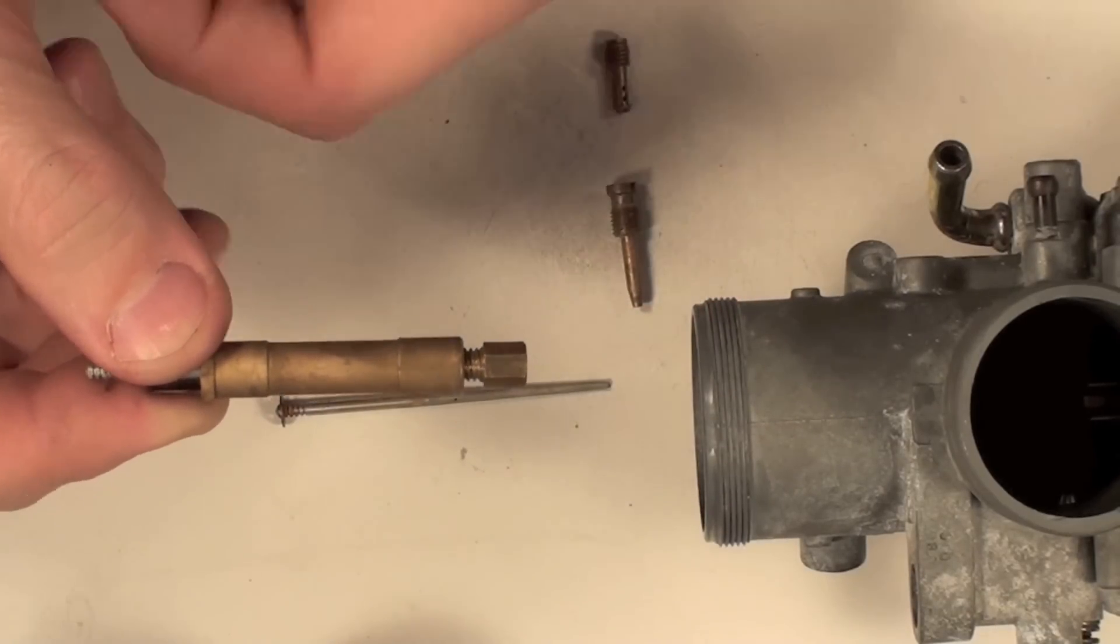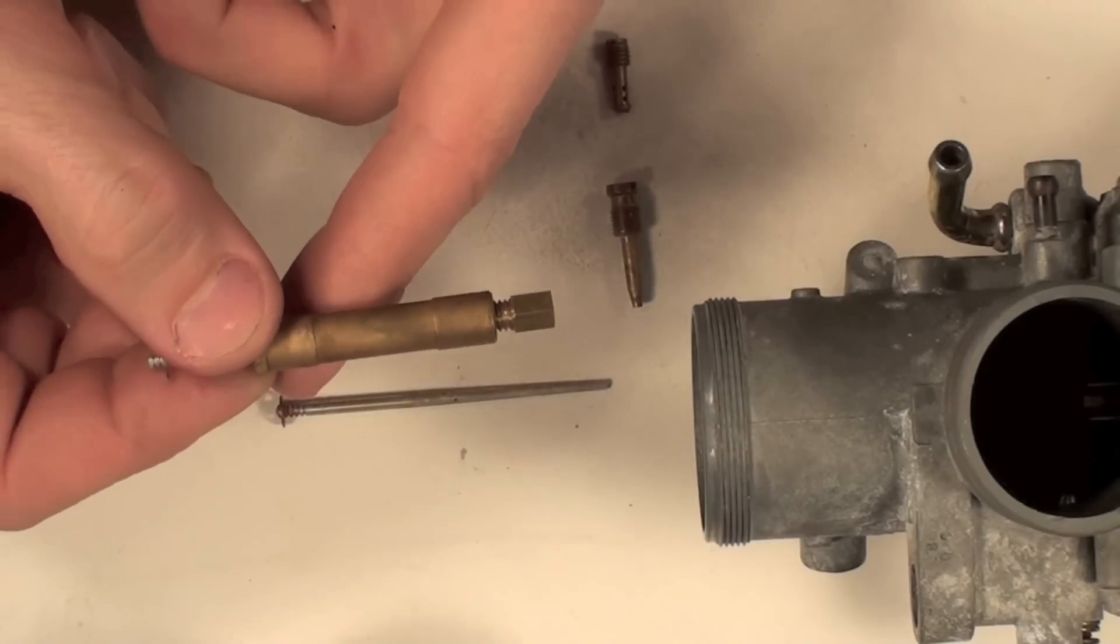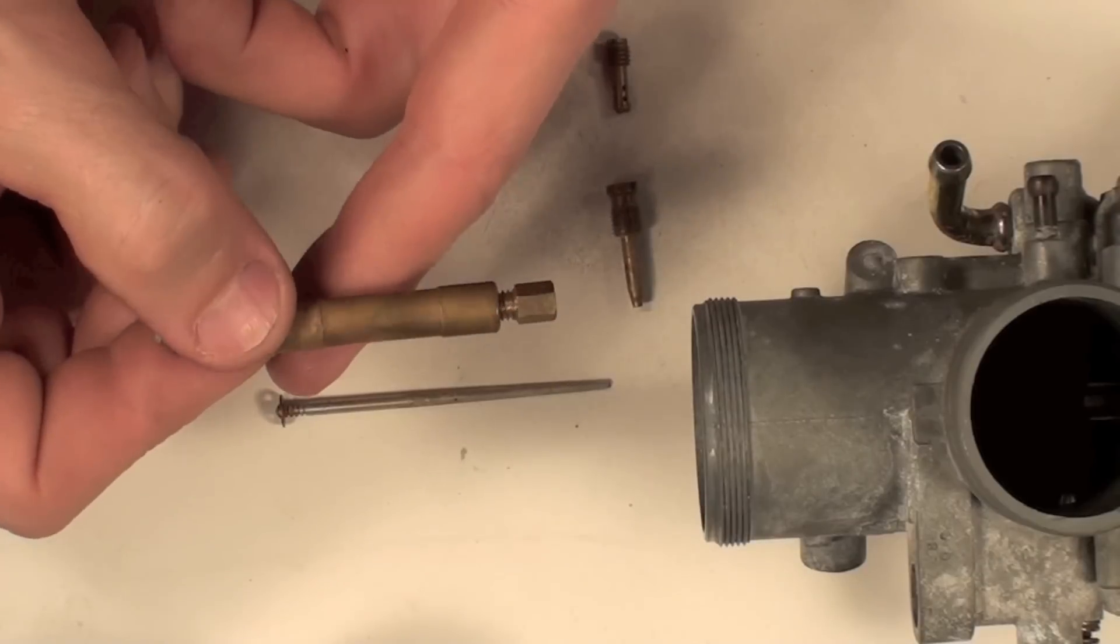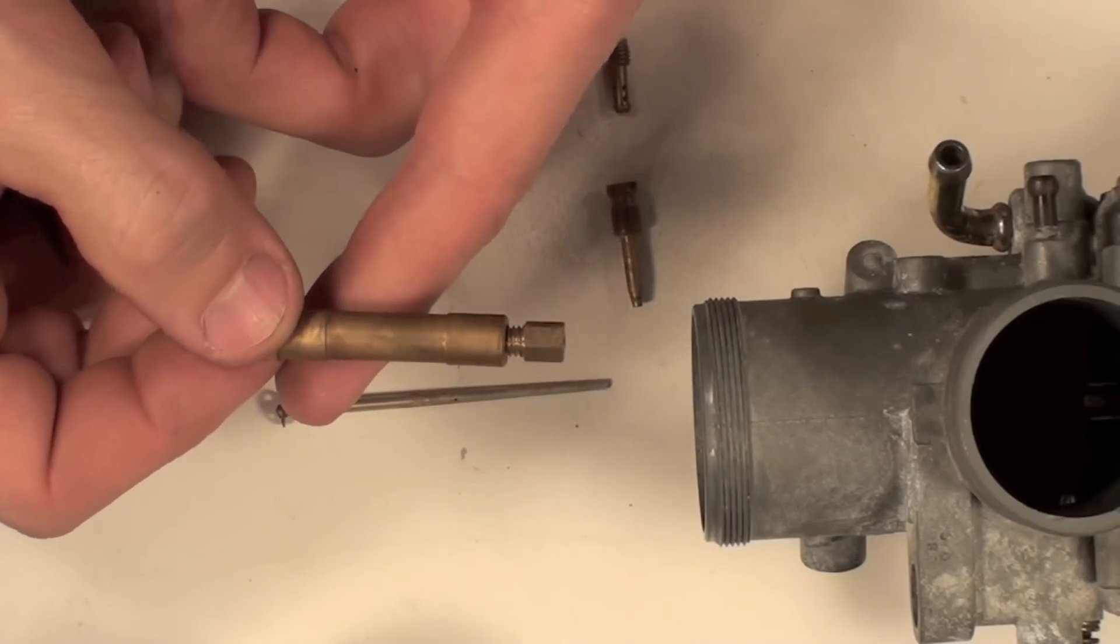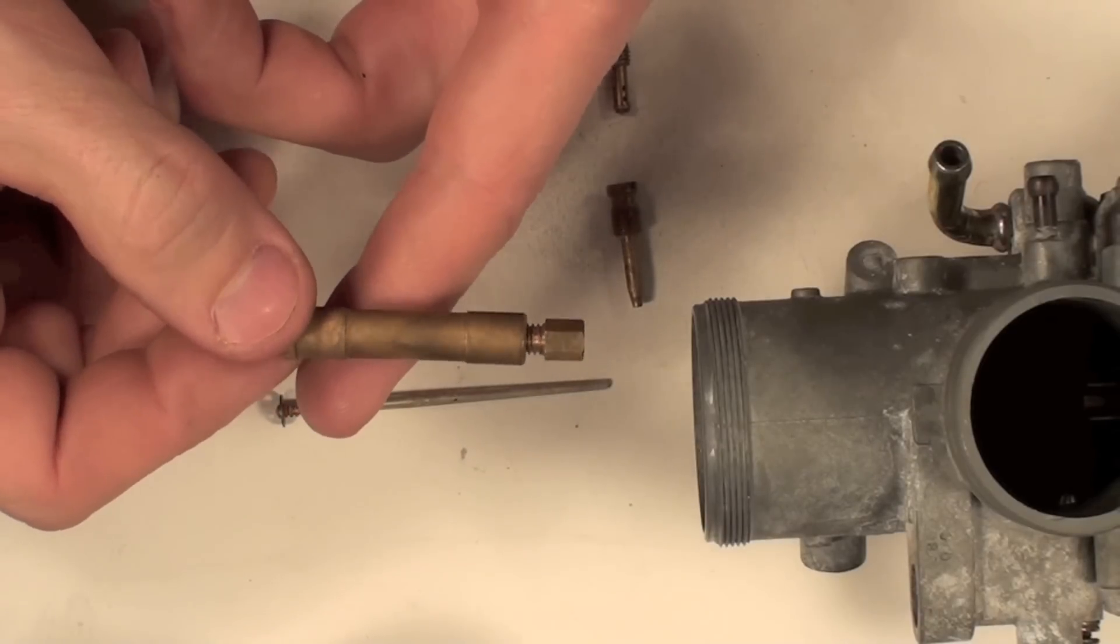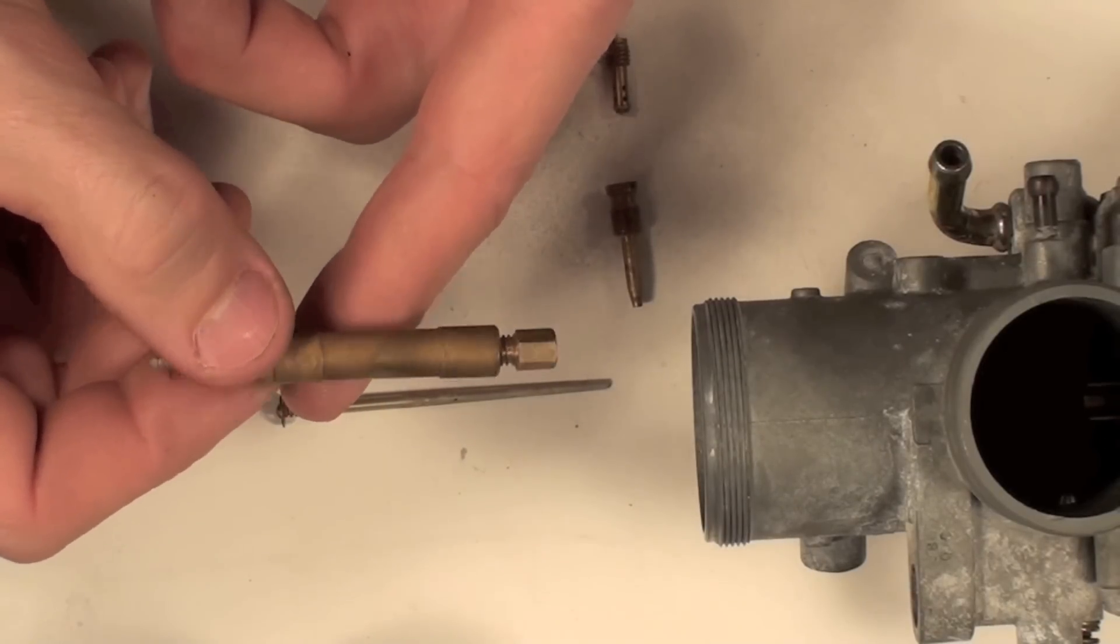The reasons why you might want to jet up or down is, say you've made some modifications to your sled. Maybe you've put a set of pipes on it, you've changed the clutching, taken the air box off it, maybe put a new air box on. There are a multitude of different reasons you might have to do that.